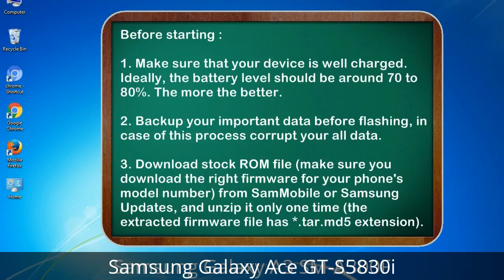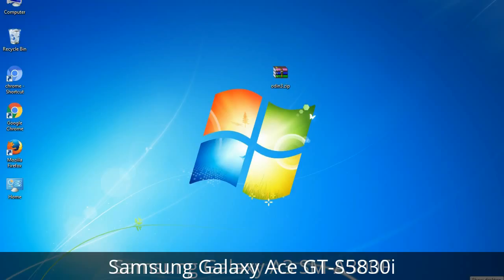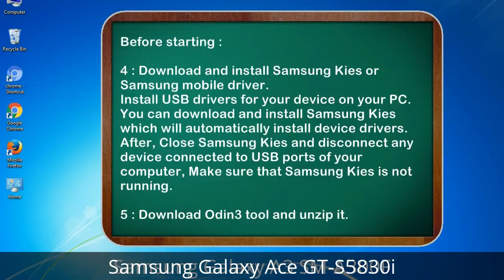Before starting: 1. Make sure that your device is well charged. Ideally, the battery level should be around 70 to 80% — the more the better. 2. Back up your important data before flashing, in case this process corrupts your data. 3. Download the stock ROM file. Make sure you download the right firmware for your phone's model number from Sammobile or Samsung Updates, and unzip it only one time. The extracted firmware file has a .tar.md5 extension.